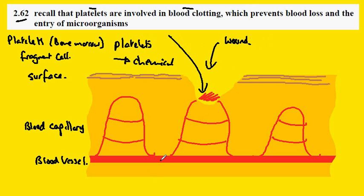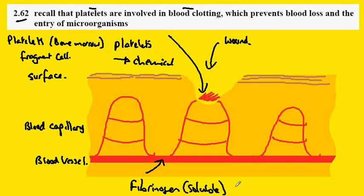Now in the blood already there is a protein called fibrinogen and this is soluble. But with the chemical from the platelets this turns into fibrin which is solid.